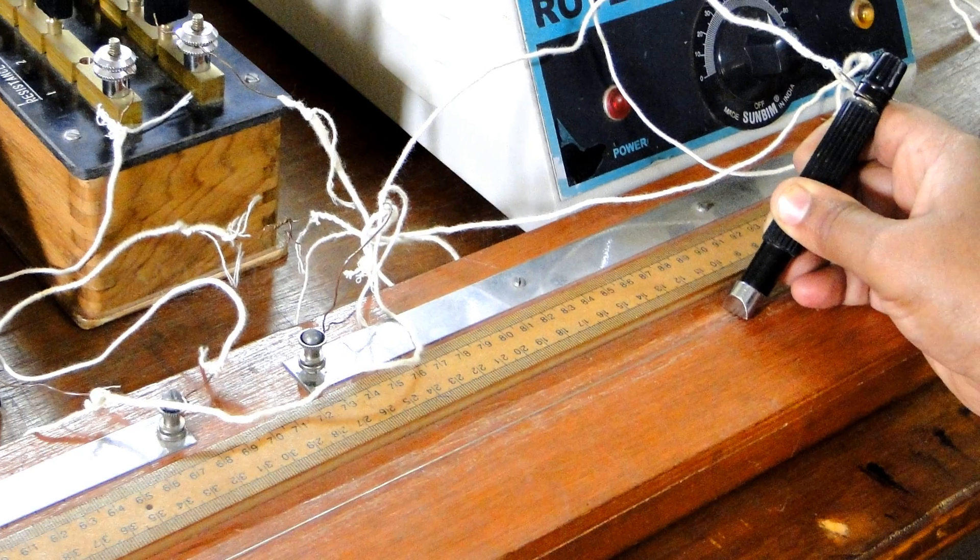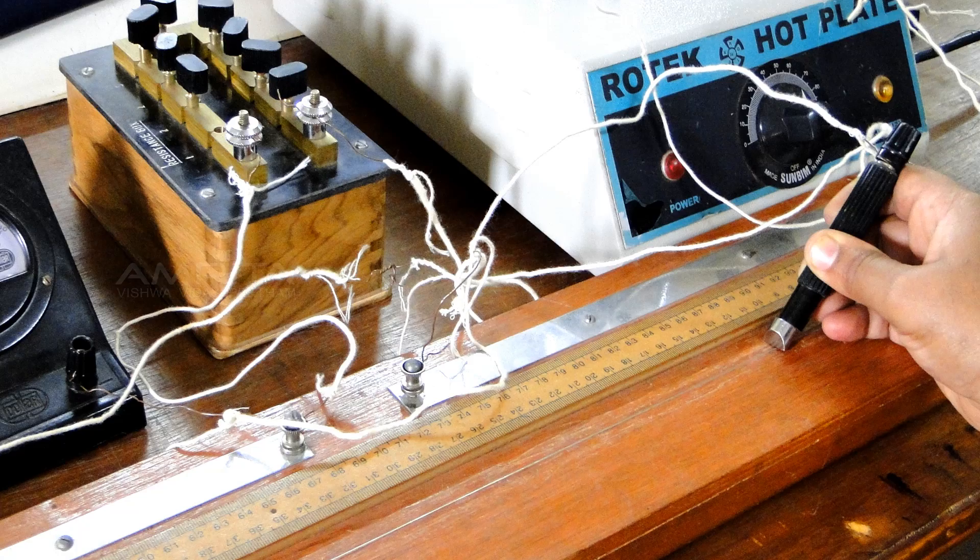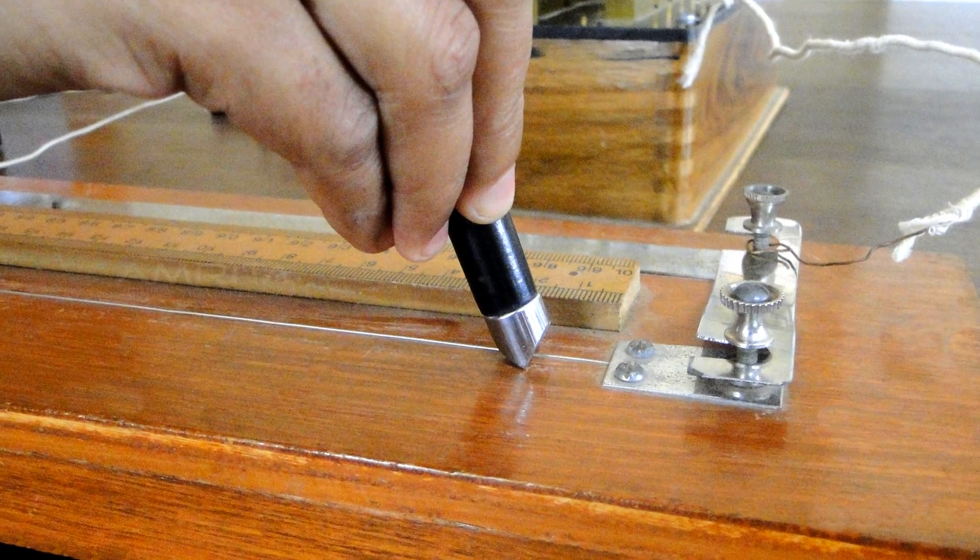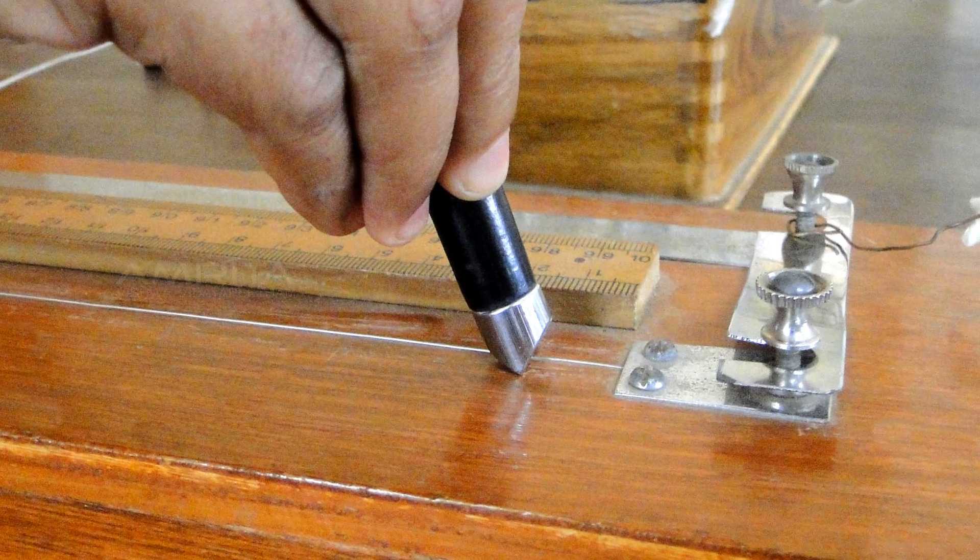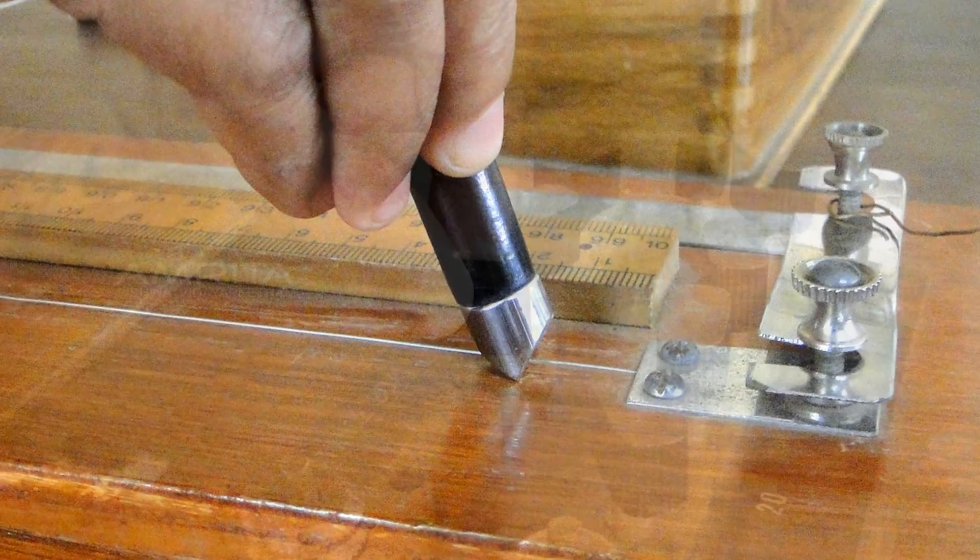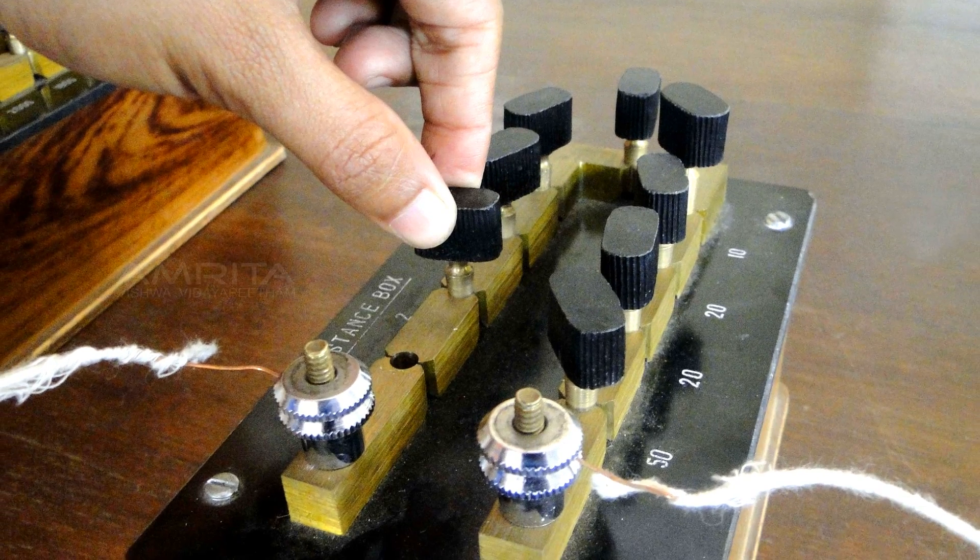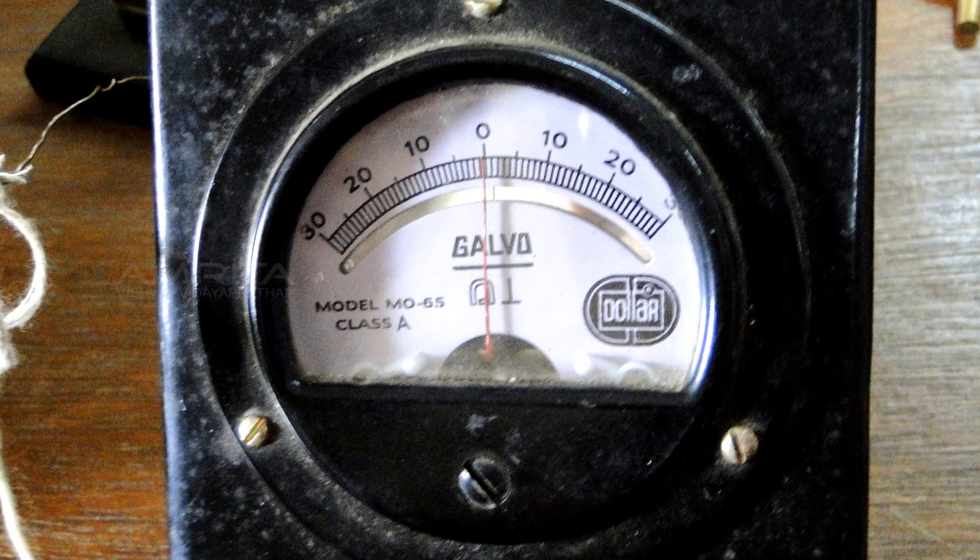If the jockey has been moved right to this point, the galvanometer will start deflecting to the right side. Even after the jockey reaches the right end of the bridge wire, if the balance point is not found, then increase the resistance of the fractional box and repeat the previous steps. Continue this until we get a balancing point.